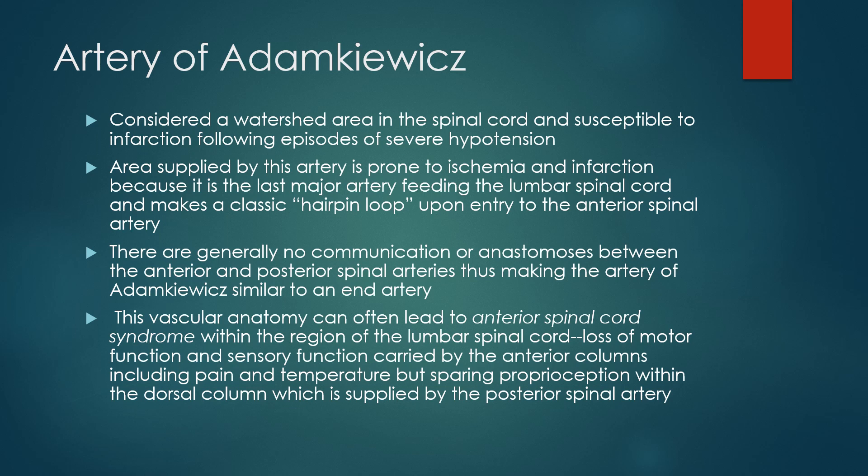The area of the spinal cord supplied by the artery of Adamkiewicz is considered a watershed area, susceptible to infarction following episodes of severe hypotension. It is the last major artery feeding the lumbar spinal cord and makes a hairpin loop upon entry to the anterior spinal artery. There are generally no anastomoses between the anterior and posterior spinal arteries, making the artery of Adamkiewicz similar to an end artery. This vascular anatomy can lead to anterior spinal cord syndrome — loss of motor function and sensory function carried by the anterior columns, including pain and temperature, but sparing proprioception within the dorsal column, which is supplied by the posterior spinal artery.